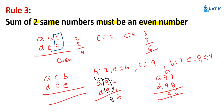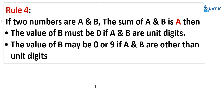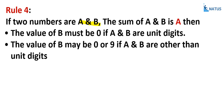That is Rule 3. Rule 4: If A plus B equals A, then B must be 0 if A and B are unit digits. If A and B are in positions other than the unit place, then B may be 0 or 9.